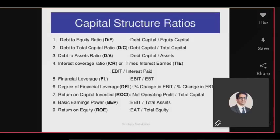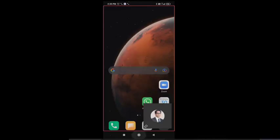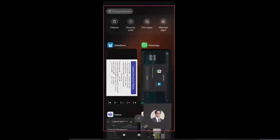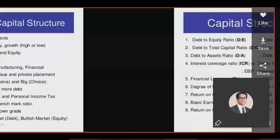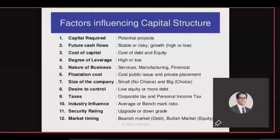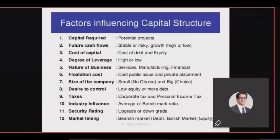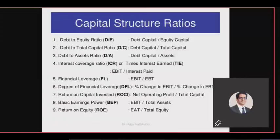So to summarize so far: we understand capital, debt capital, equity capital, and the definitions of capital structure shown in a company's balance sheet. These are not the only factors influencing capital structure decisions — there are many. Important ratios help measure capital structure. The first is debt-equity ratio — total debt capital divided by total equity capital. For a zero-debt company the ratio is zero; if debt and equity are each one crore, the debt-equity ratio is 1:1.